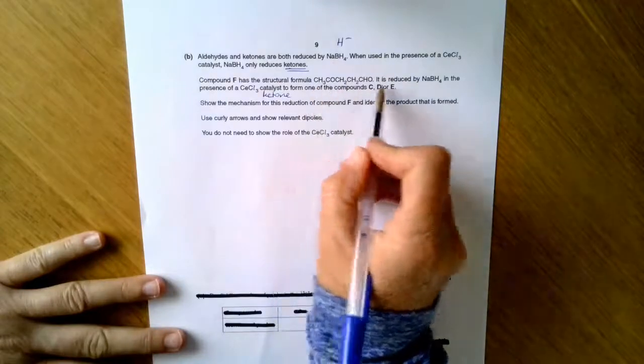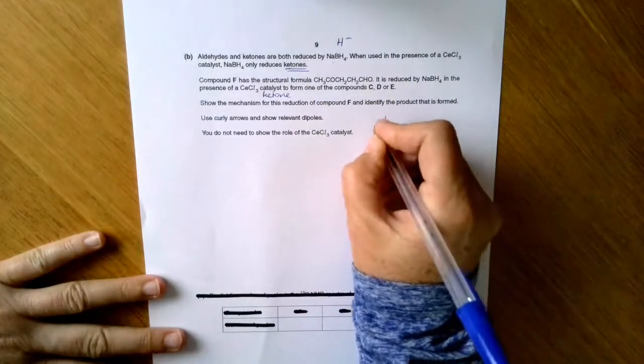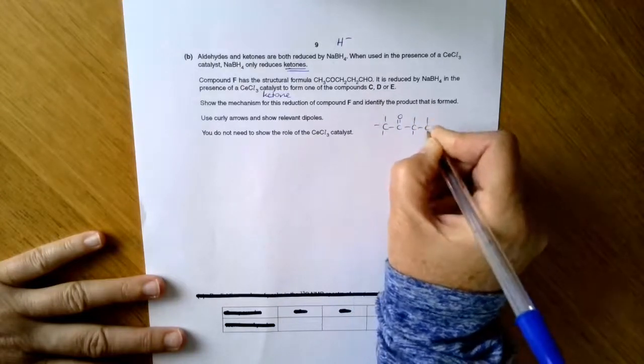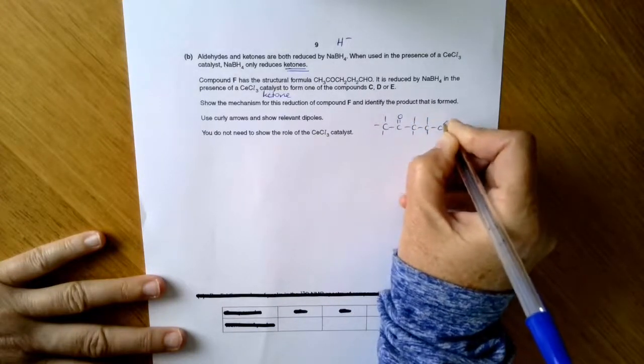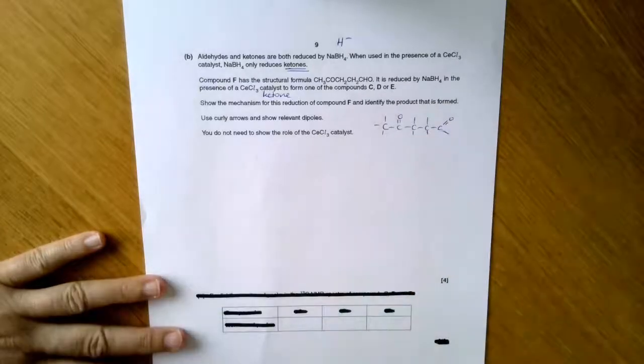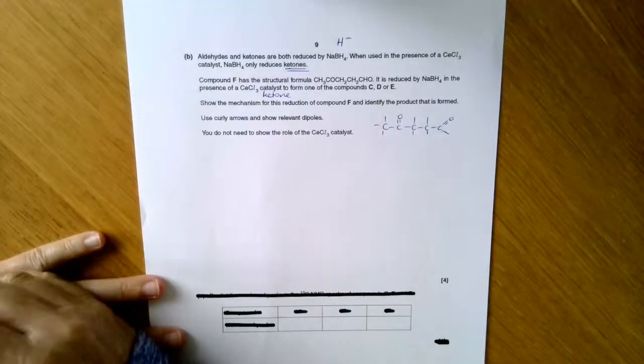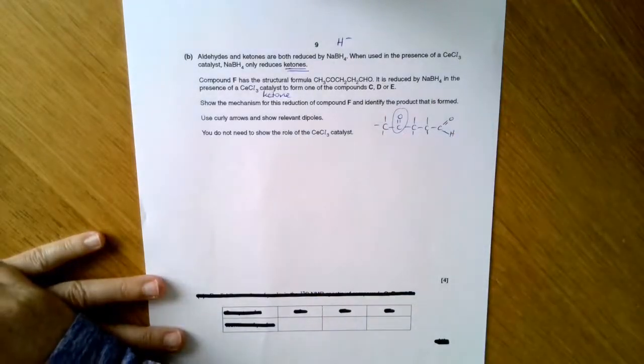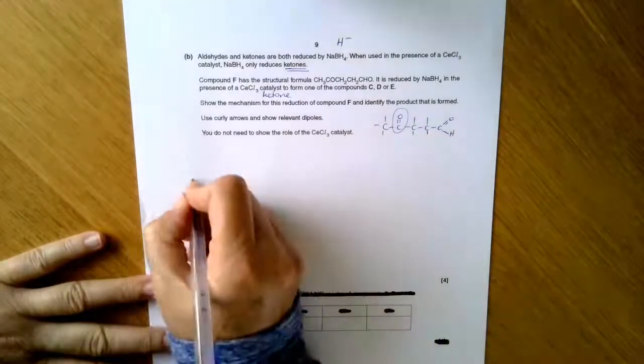So the mechanism for this reaction identify the product formed. So what I'm going to do is I'm going to draw out this structure. And that's going to help me focus on which bit of my structure is going to take part in the reaction. Because the question tells me only the ketone takes part. So it's here that I'm going to do the chemistry. The end here has got a hydrogen on it. So that's the aldehyde at the end. So show the mechanism. Here we go then.